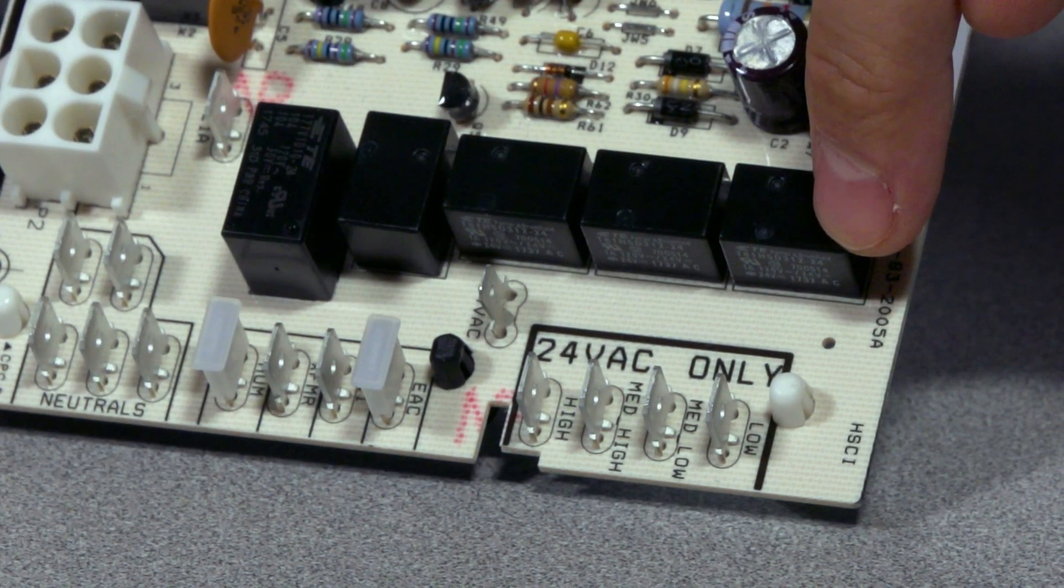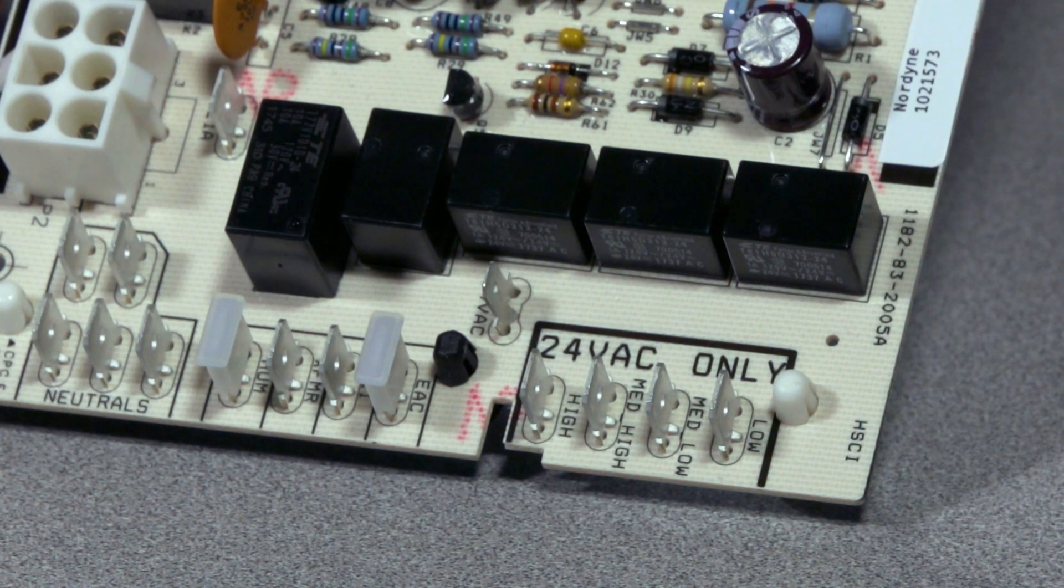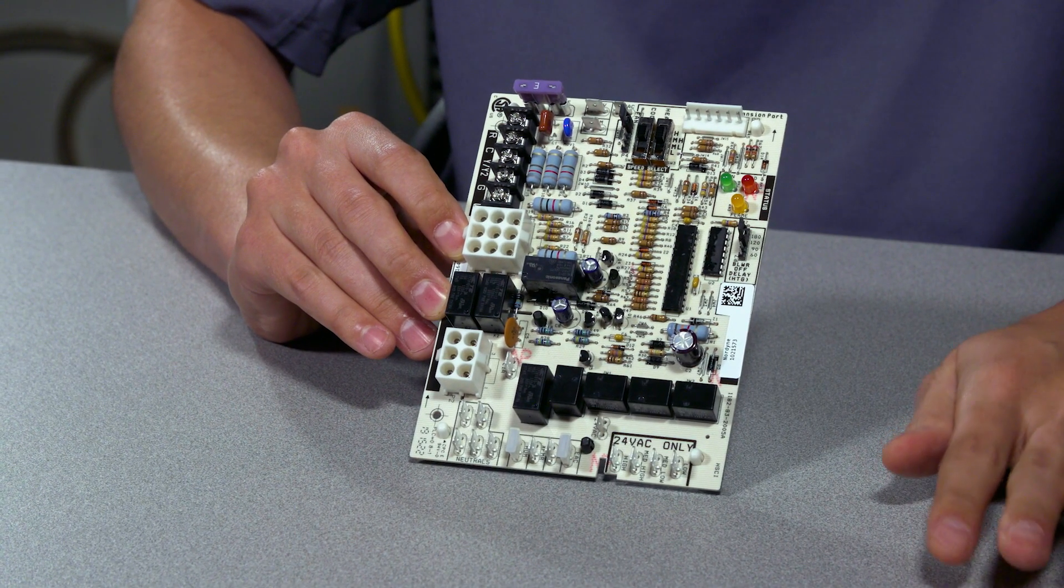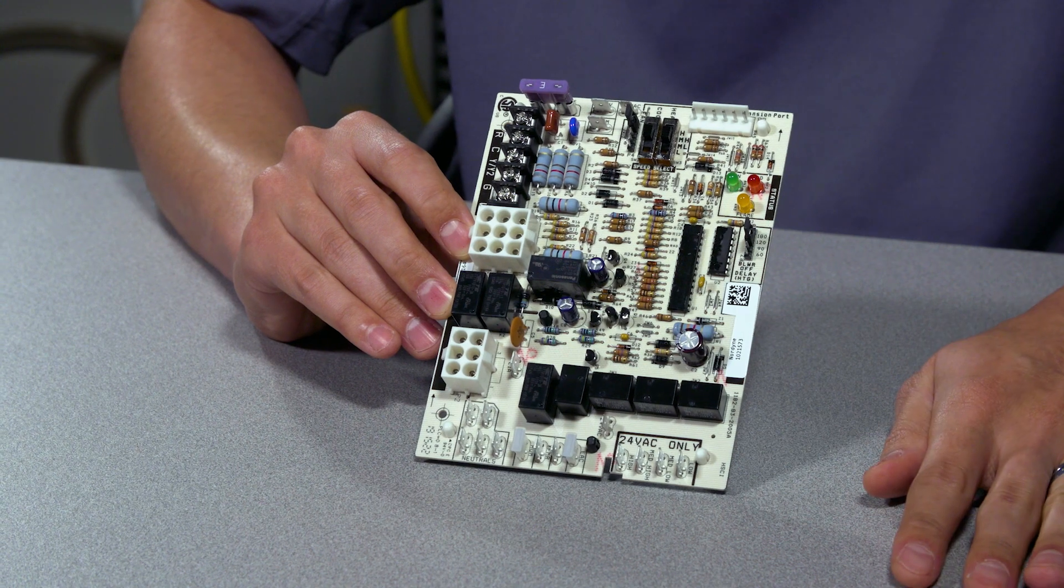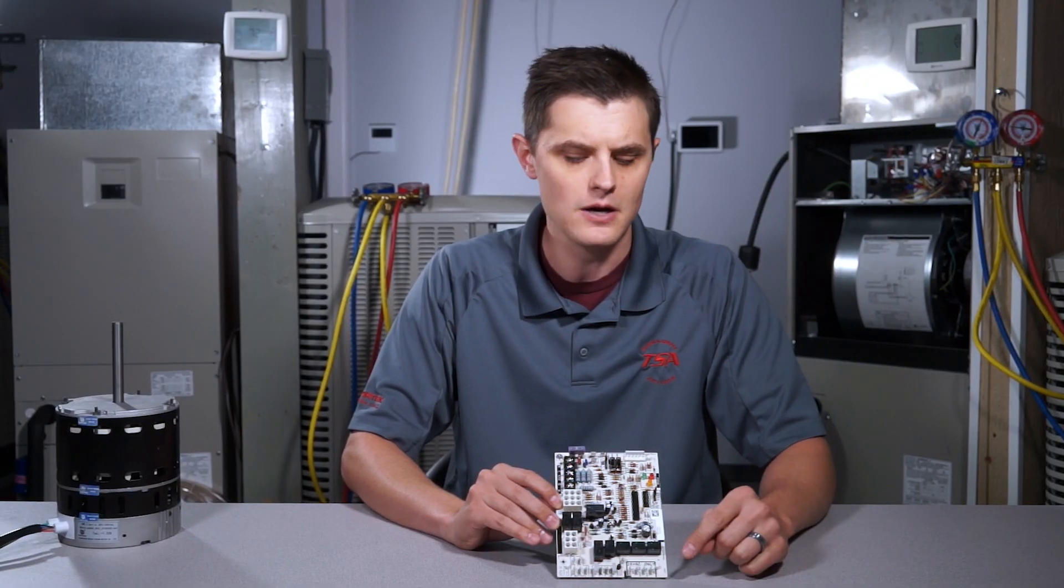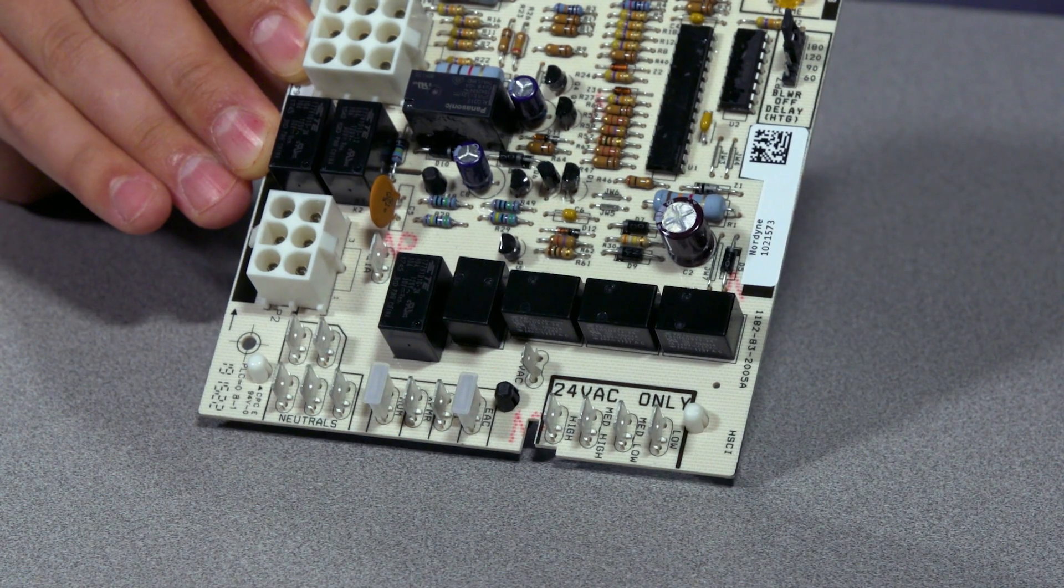These relays here which correspond to these plugs right here, they've gotten a little bit smaller to handle the 24 volt. With the new furnaces, you cannot put an older single stage board on a new FER rated furnace because the power output at the bottom is going to be different and it just won't work.